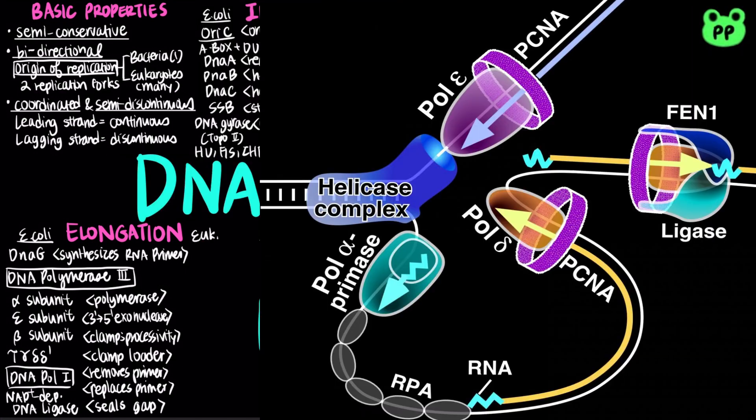For eukaryotes, the RNA primer is synthesized by DNA polymerase alpha, which contains a primase subunit but lacks 3' to 5' exonuclease proofreading activity. Therefore, it dissociates after extending a short fragment of the primer.